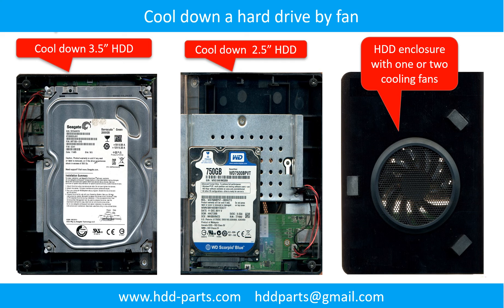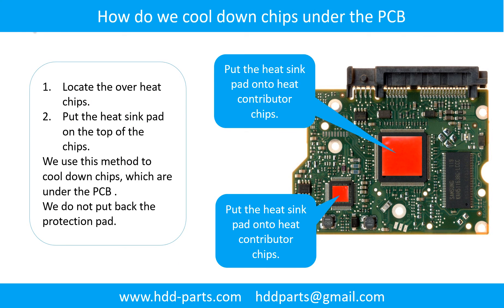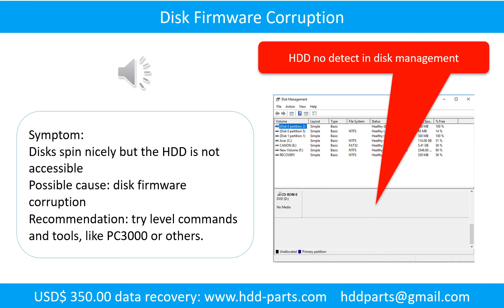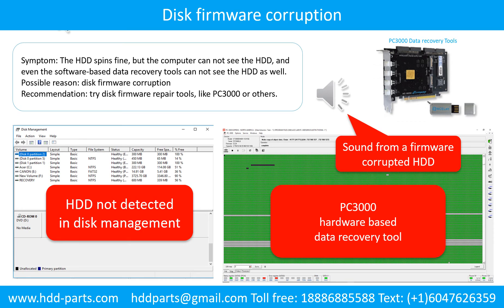This picture shows how to use a fan to cool down the hard drive. This picture shows how to cool down the overhead chips which are under the PCB board. Disk firmware corruption: the hard drive spins fine, but the computer cannot see the hard drive, and even the software-based data recovery tools cannot see the hard drive as well.